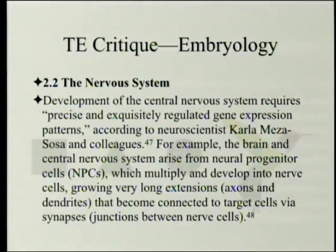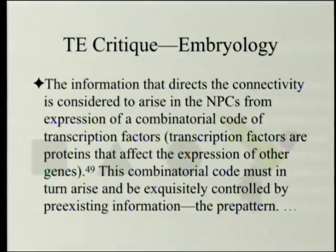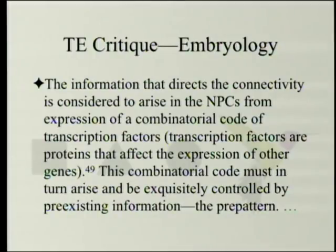The nervous system: development of the central nervous system requires precise and exquisitely regulated gene expression patterns, according to neuroscientist Karla Menza-Sosa and colleagues. The brain and central nervous system arise from neuro progenitor cells which multiply and develop into nerve cells, growing very long extensions — axons and dendrites — that become connected to target cells via synapses. The information directing connectivity arises from a combinatorial code of transcription factors — proteins that affect the expression of other genes — which must in turn arise from pre-existing information: the pre-pattern.